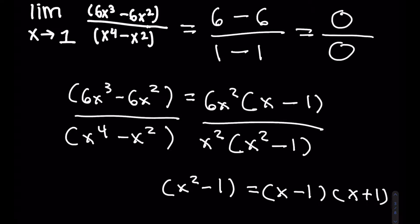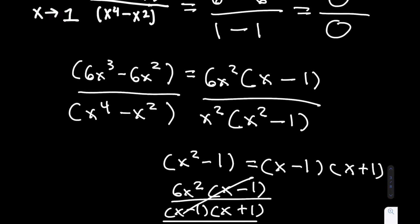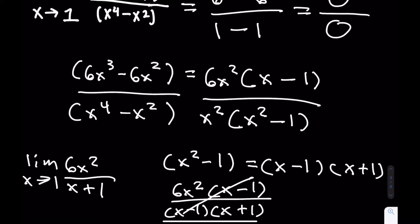So on the bottom we have x squared times (x minus 1)(x plus 1). The x minus 1 terms cancel, leaving the limit as x approaches 1 of 6x squared over x plus 1. Plugging in 1: 6 times 1 squared is 6, over 1 plus 1, which is 2. So 6 over 2 equals 3. Our final answer is 3.